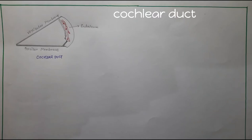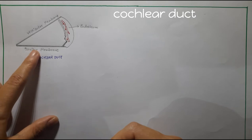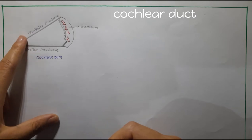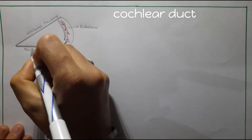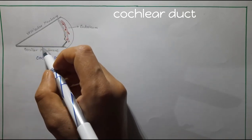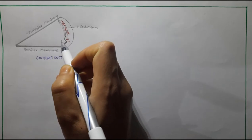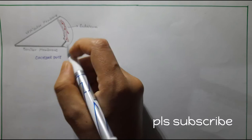Hi friends, this is Miss Medico channel. Today we will continue our video lecture on the organ of Corti. As you know, we had already discussed the scala media, also called the cochlear duct, the basilar membrane, the vestibular membrane, and the organ of Corti — the organ for hearing.